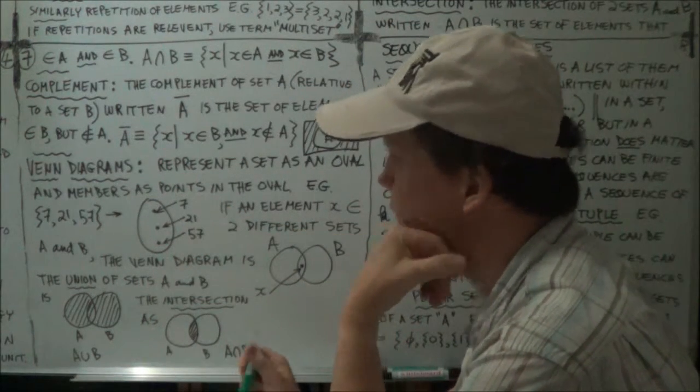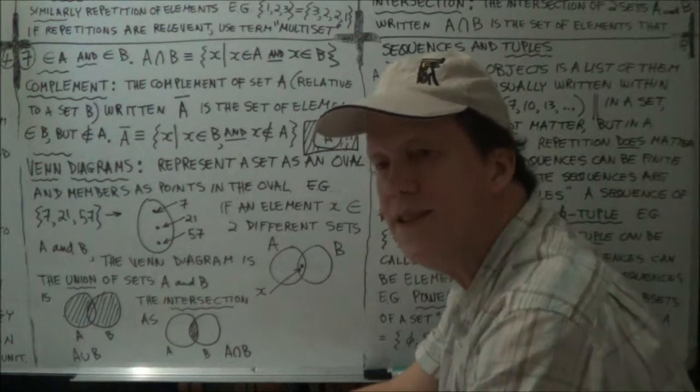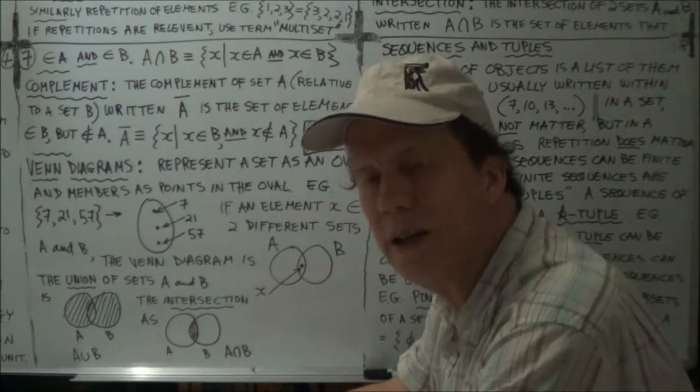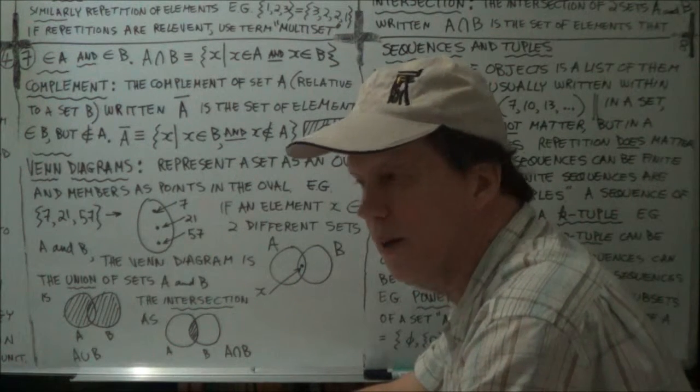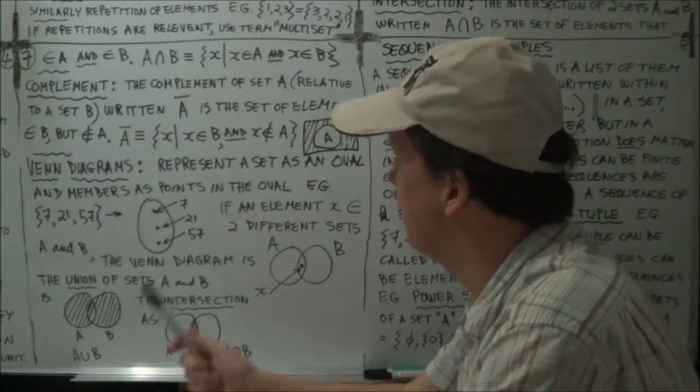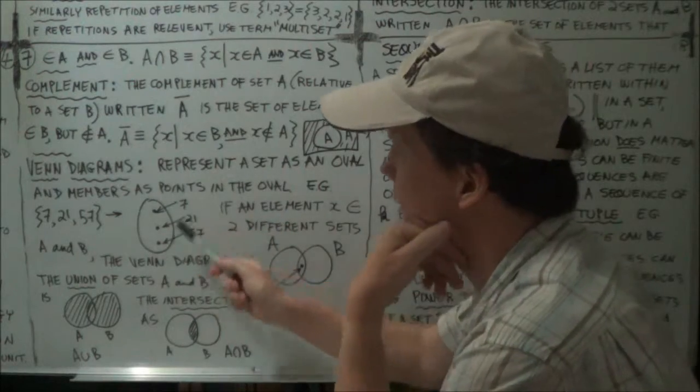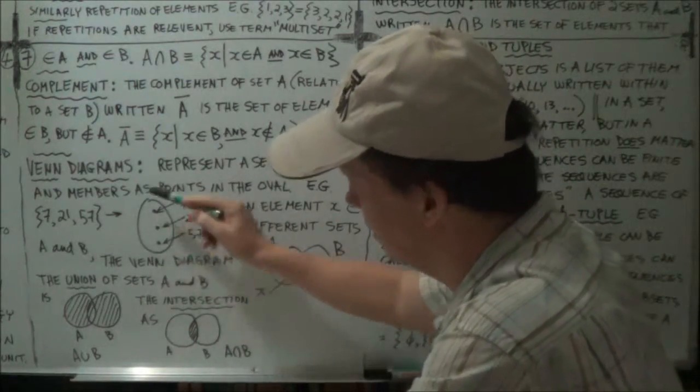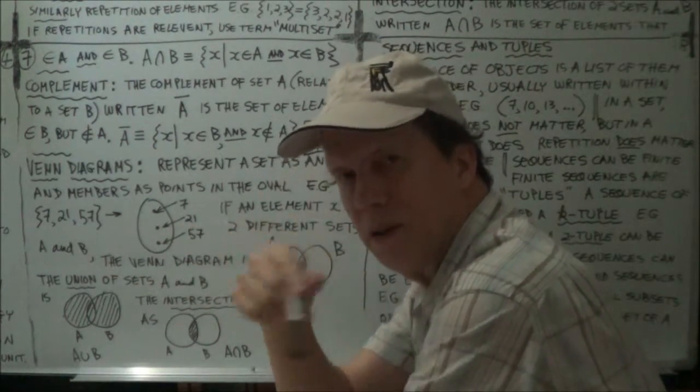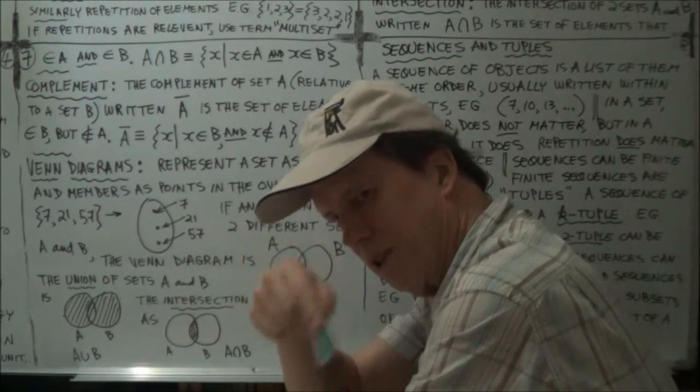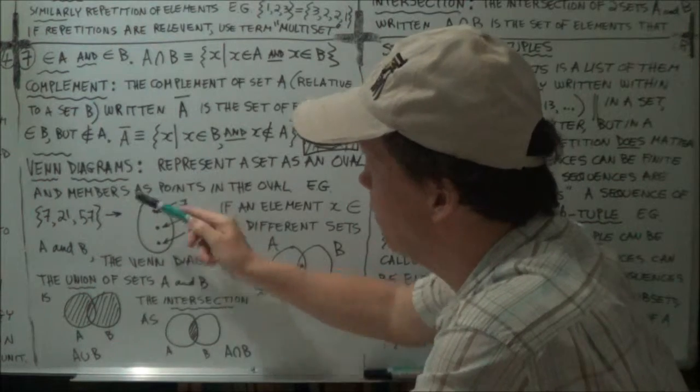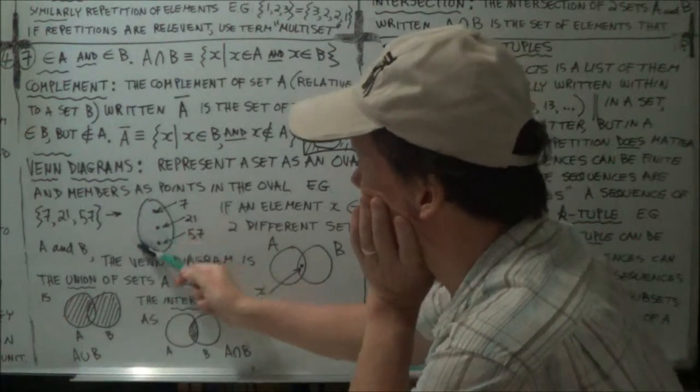Okay, what's a Venn diagram? It's a sort of easy, intuitively easy way to represent a set. The set, you just represent as an oval, like an ellipse shape, like an egg shape, a squashed circle shape, an oval shape. That represents your set, okay, so this set here.